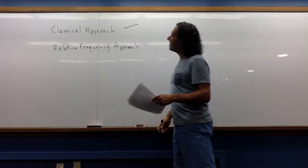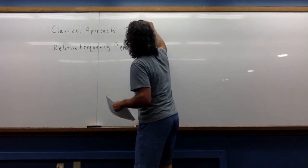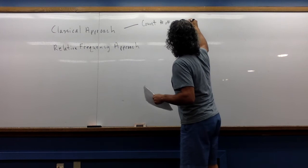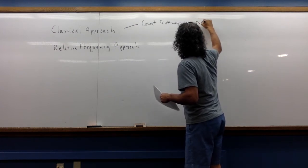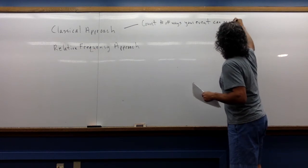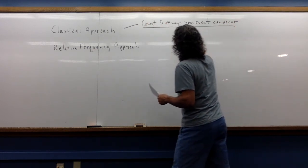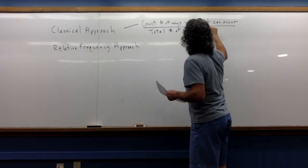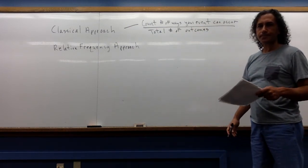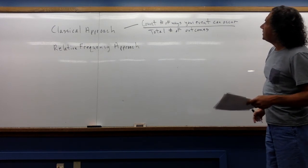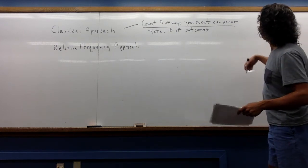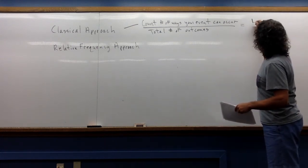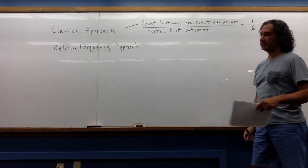In the classical approach, what you're going to do is you're just going to count the number of ways your event can occur and you're going to divide by the total number of outcomes. So as an example, if I want to know the probability of getting a 3, I roll a die, that's just going to be 1 out of 6. So I'm just counting.